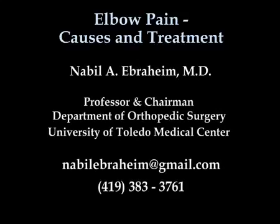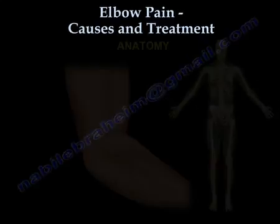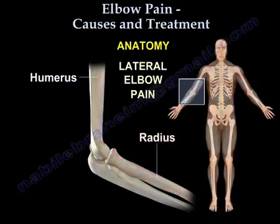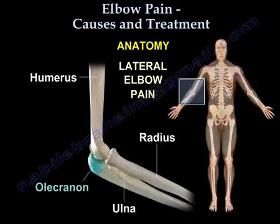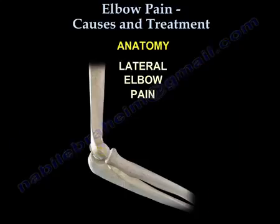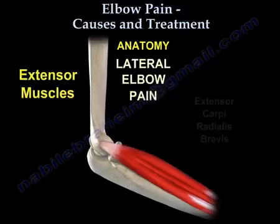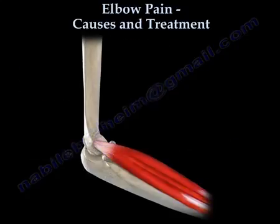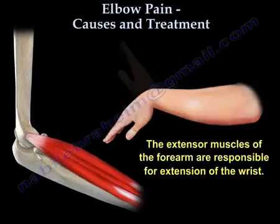Elbow pain causes and treatment. On the lateral side, you can see the humerus and the radius. The ulna is on the medial side; the proximal end of the ulna is called the olecranon. The lateral epicondyle provides attachment to the extensor muscles of the wrist — these are the muscles responsible for extension of the wrist.